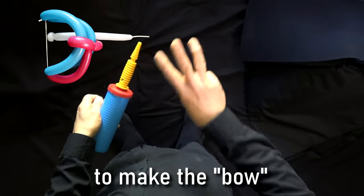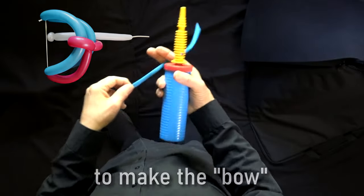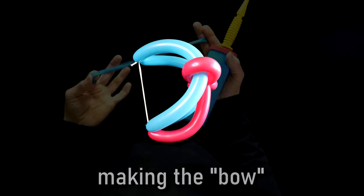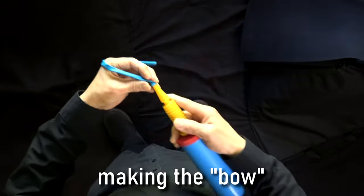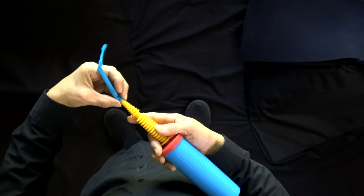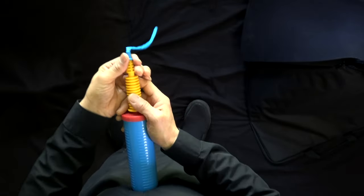For this bow and arrow, you're going to need three balloons. So let's start with the first one. You're going to inflate this one almost all the way to the end. Just leave a little bit of uninflated end to tie it.